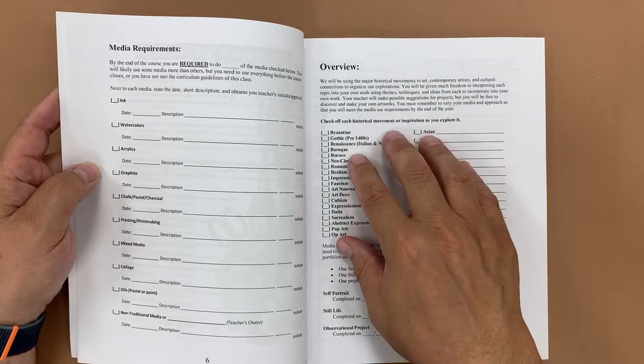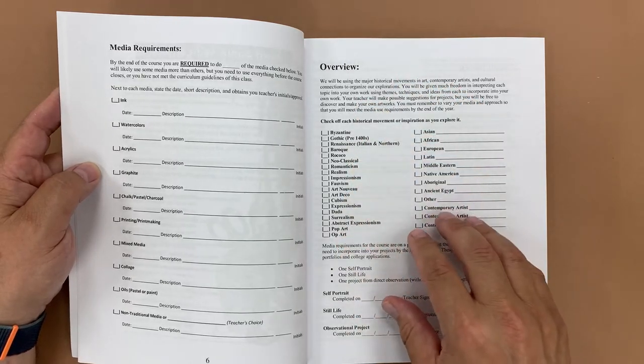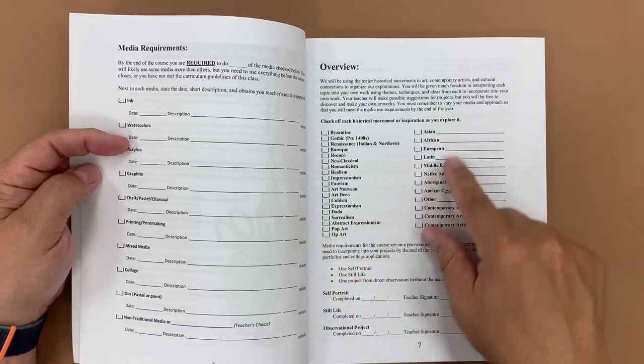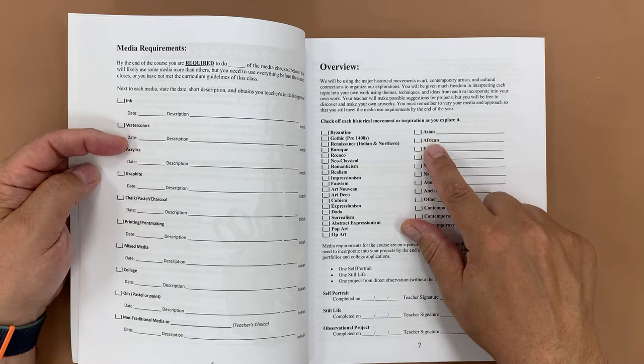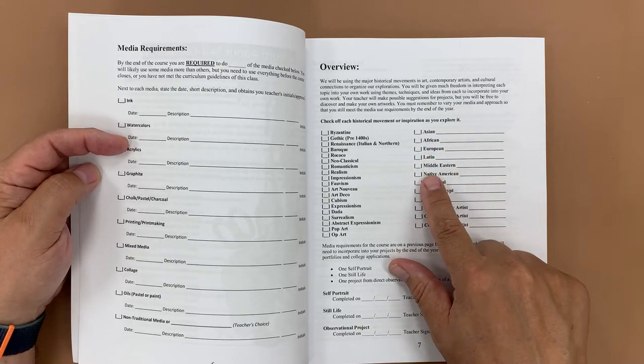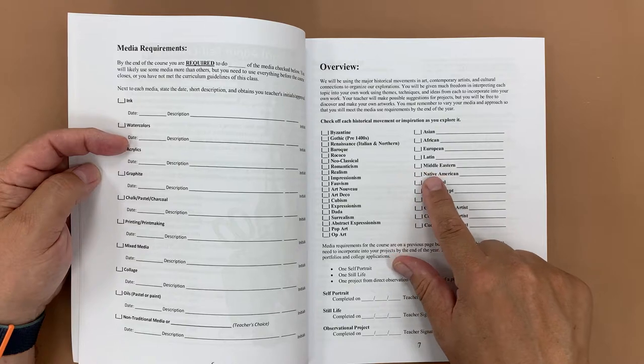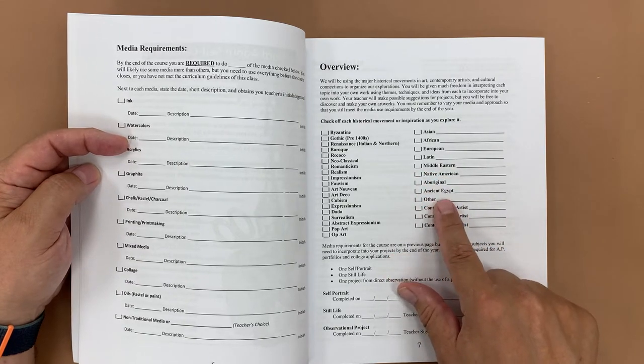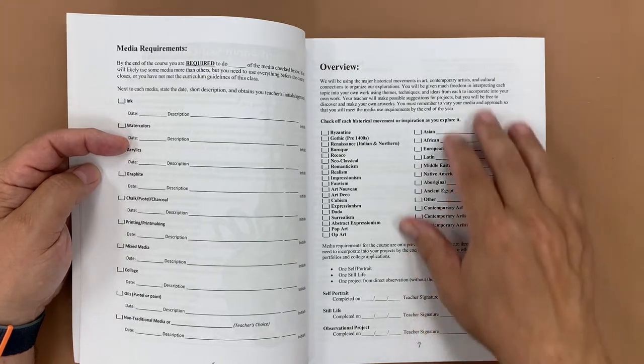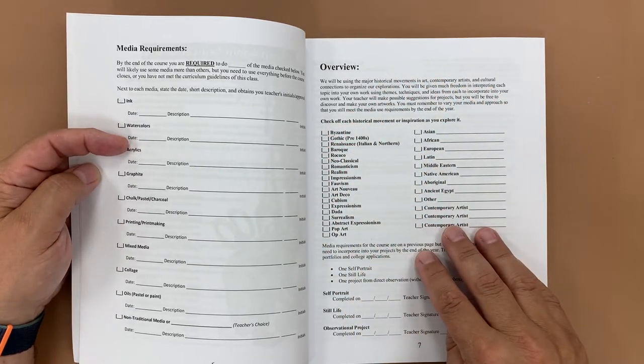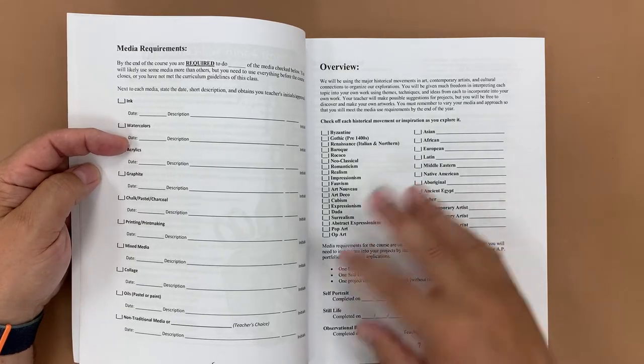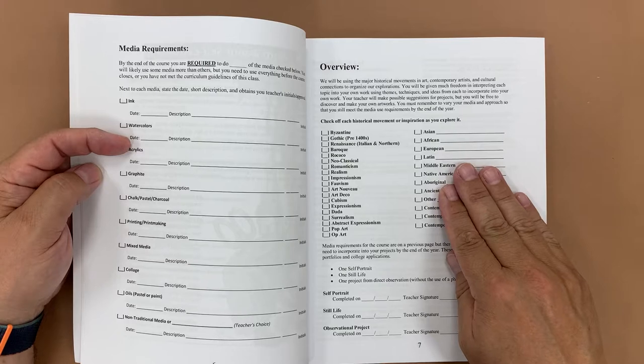As an overview, I have organized this book by major historical period from the Byzantine movement all the way through op art, plus I've included some overall areas of Asia, Africa, Europe, Latin America, Middle Eastern, Native American, Aboriginal, Ancient Egypt and other, plus some contemporary artists. So students choose a theme to explore and create their own work of art that is going to harken back to one of these periods or to one of these cultures.